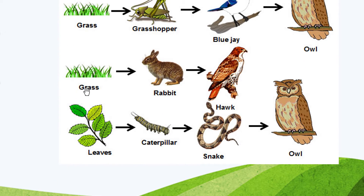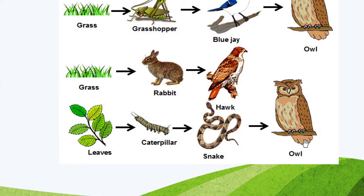Another example: the grass is eaten by the rabbit, the rabbit is eaten by the hawk. Also: leaves are eaten by caterpillar, caterpillar is eaten by snake, snake is eaten by owl. In other words, the owl eats the snake, the snake eats the caterpillar, and the caterpillar eats leaves.